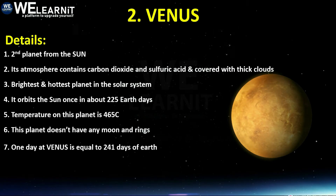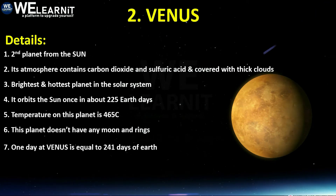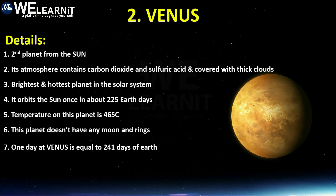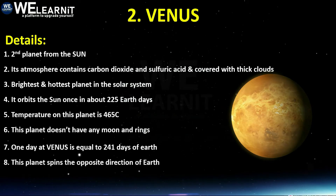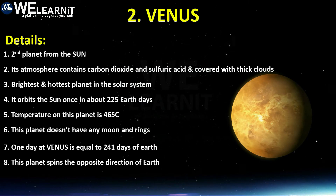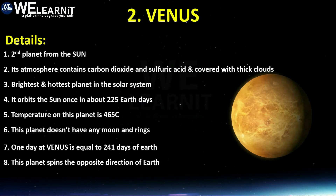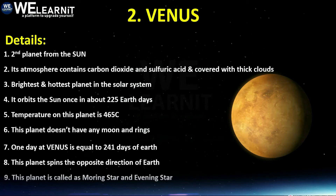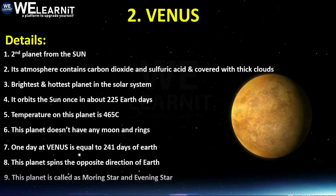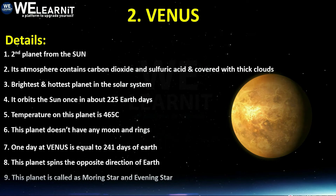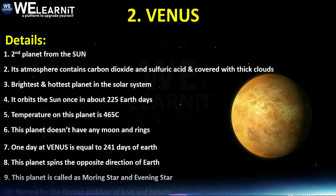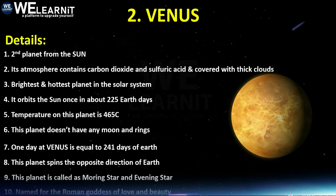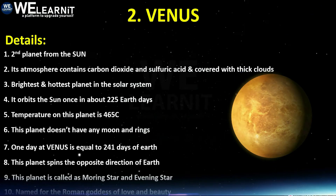Venus doesn't have any moon or rings. One day on Venus is equal to 241 Earth days. This planet spins in the opposite direction of the Earth. Venus is called the morning star and evening star, and it is named for the Roman goddess of love and beauty.